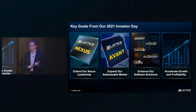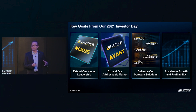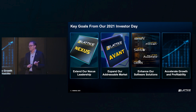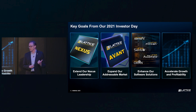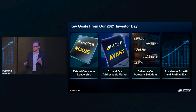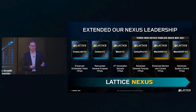The second goal was to double our addressable market by expanding into the mid-range part of the FPGA market, an adjacent part of the market. The third goal was around software — a very important part of our strategy and how we enable our customers to adopt our solutions. And our fourth goal was to accelerate top-line growth and accelerate profitability. I want to take a couple of minutes here to talk about how we made progress on each of those goals.